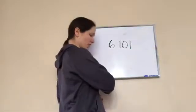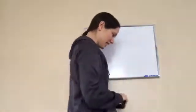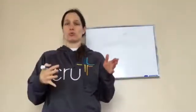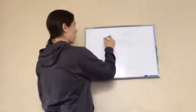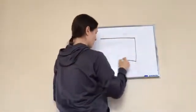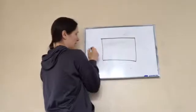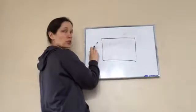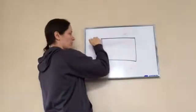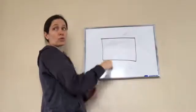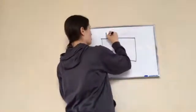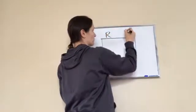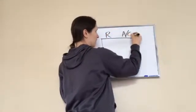Okay, sixth grade lesson 101 — this one is on ratio problems, and this time we're adding totals to it. We're also doing totals. You remember our box? We made a ratio box and we did boys to girls. Now we're going to do boys to girls and a total, which is a good thing because we're learning how to do totals with it. Up here you put an R for ratio and AC for actual count.